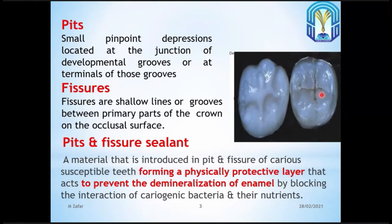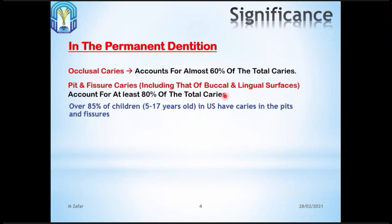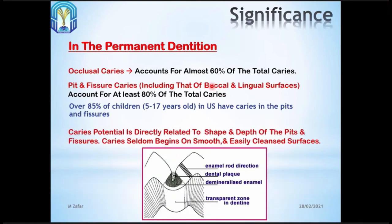Why do we need to apply pit and fissure sealant? We use this material as a preventive measure to prevent teeth from caries. As we know, caries occur mostly on the occlusal surface. The pit or fissure is a deep area that is difficult to clean. Even if the patient brushes, this area is sometimes not cleaned and plaque stays there. Due to stagnation of plaque, this area is prone to caries. Dental caries can start from pits and fissures, which is why most caries cases occur there.